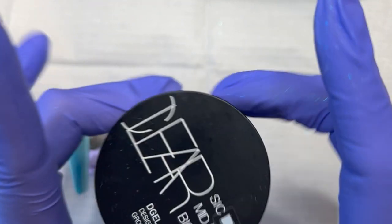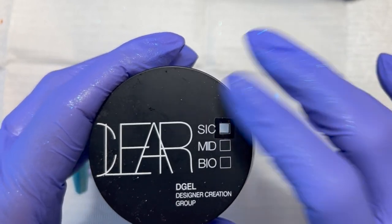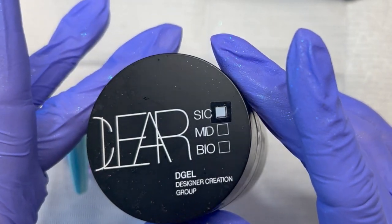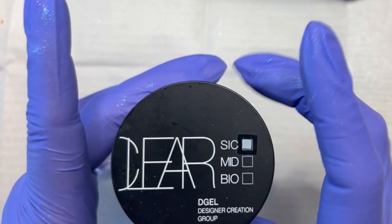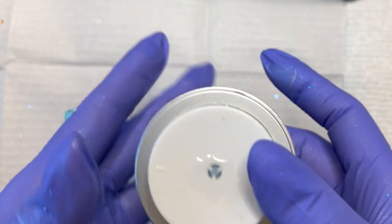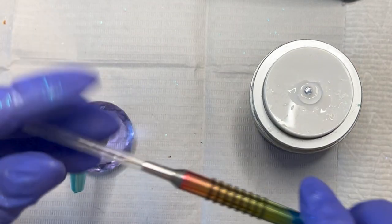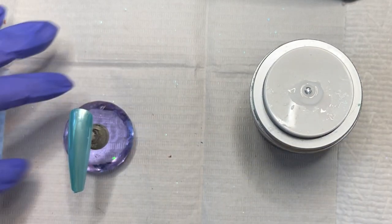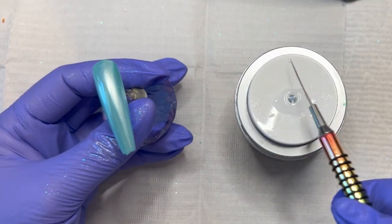Moving along, the builder gel that I'm using is the SIC level of gel by Dagel. It is clear builder gel and the SIC is the thickest formula that they have. It's in a pump action which I absolutely love, and I'm going to be using a long liner.